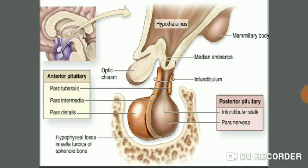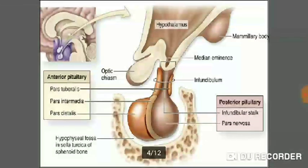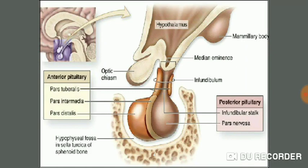The pituitary gland is protected by a bony cavity known as sella turcica, which is a type of sphenoid bone. The blood supply comes from the median eminence. Many of the hormones synthesized in the anterior pituitary are controlled by hormones released from the hypothalamus, which reach the gland through the blood via the median eminence. So the median eminence is the blood source to the pituitary gland.